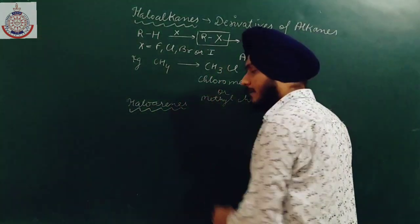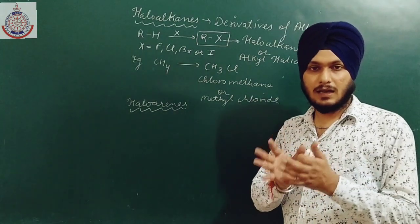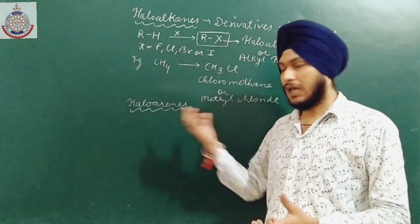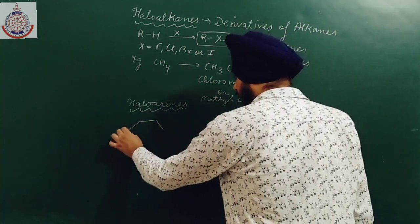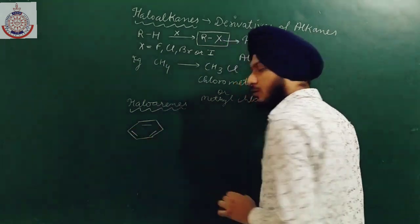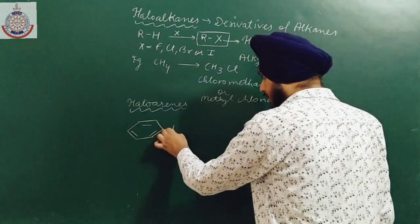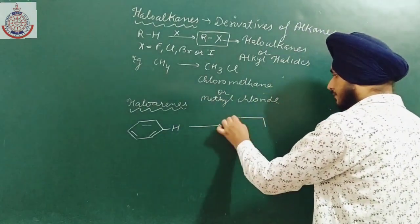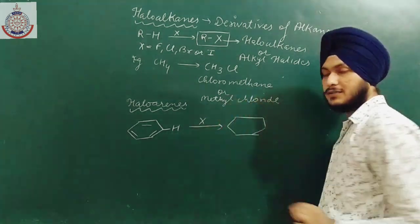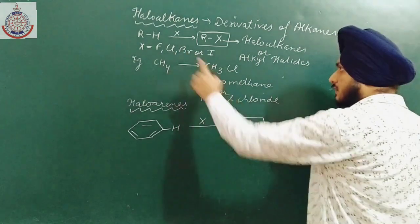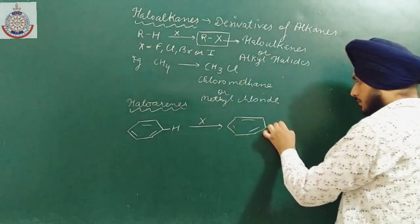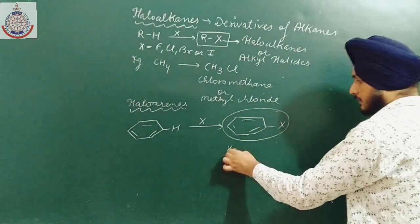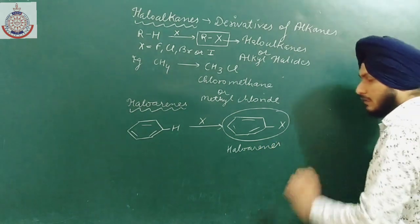What are Haloarenes? If a halogen group is directly attached to an aromatic system, then that class of compounds is known as Haloarenes. For example, if we have a benzene ring with six hydrogen atoms and I replace any of the hydrogen atoms with any halogen group X, we will get a compound known as a Haloarene.